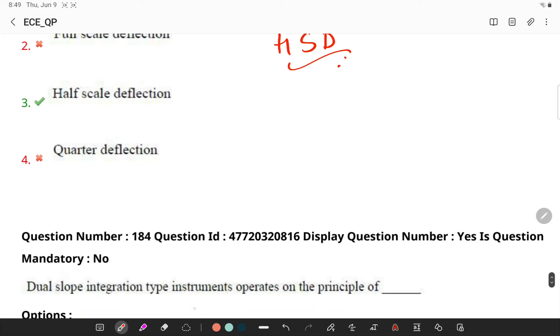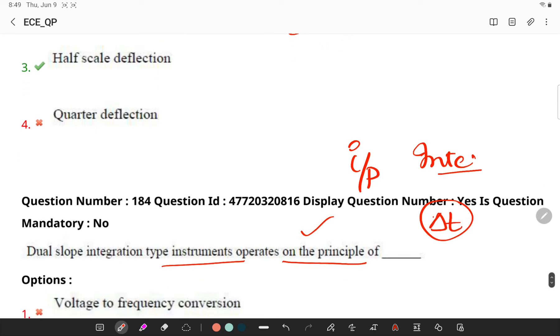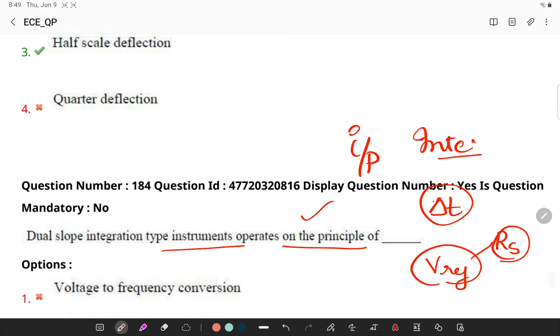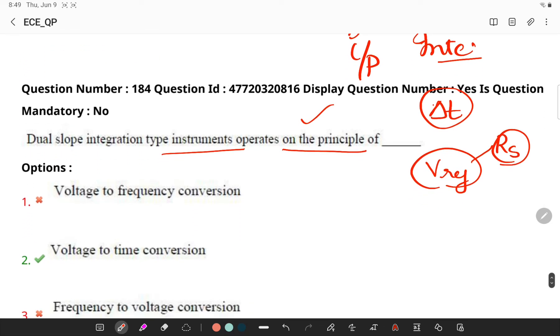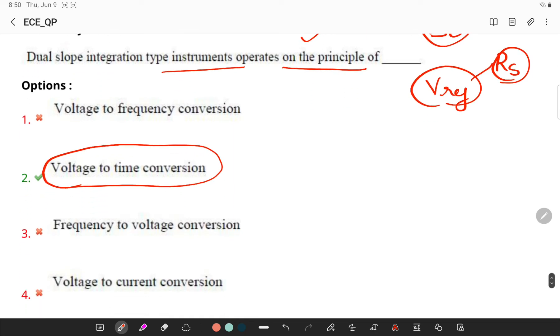Dual slope integration type instruments operate on the principle of - remember the basic principle of this method is that the input signal is integrated over a fixed interval of time and then the same integrator is used to integrate the reference voltage with reverse slope. Hence, you get the name dual slope integration. So here voltage to time conversion is happening in this particular technique.